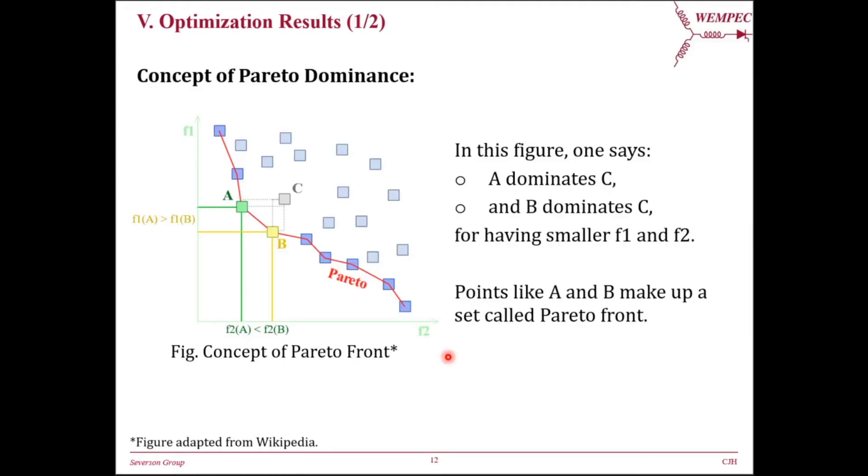Before we show the optimization results, the concept of Pareto dominance should be first introduced. In this 2D example, two objectives are defined, F1 and F2. In this figure, one says A and B dominate C for having smaller F1 and F2 values. Points like A and B make up a set of points called Pareto front. We are going to have six Pareto fronts for each slot pole combinations.